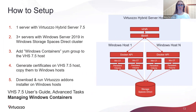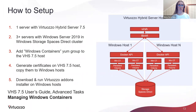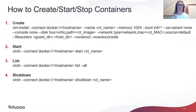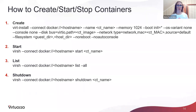Let me briefly guide you through the deployment process. First, you need one server running Virtuoso Hybrid Server and three servers — or for evaluation, virtual machines — running Windows Server 2019. Then configure the Microsoft Storage Spaces Direct cluster, generate and copy certificates, and download and run the Virtuoso Addons installer on Windows hosts. Our documentation has step-by-step instructions with exact command line options. The next slides contain commands implemented in libvirt for Windows containers, manageable similarly to virtual machines and Linux containers using virsh.